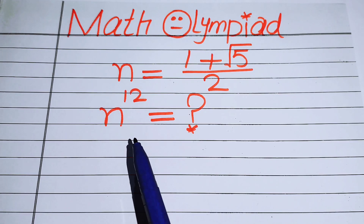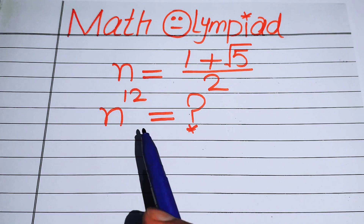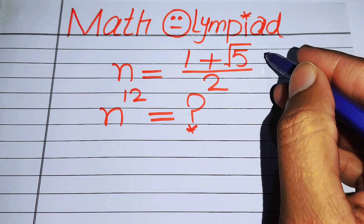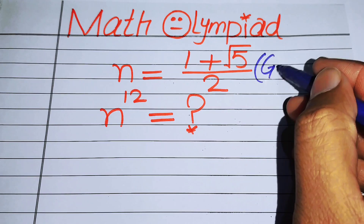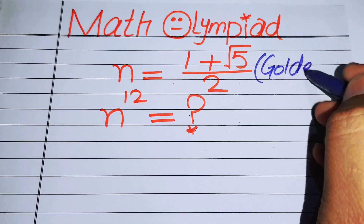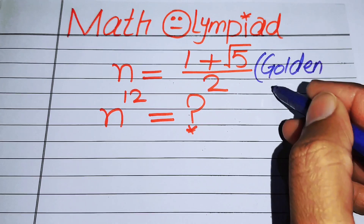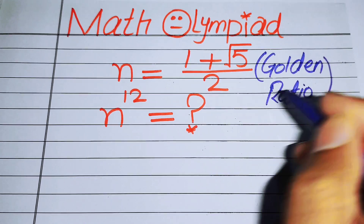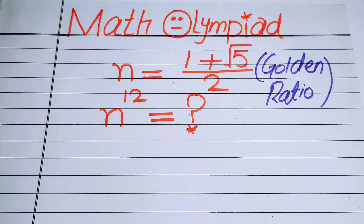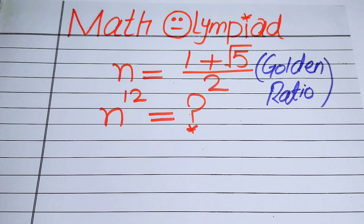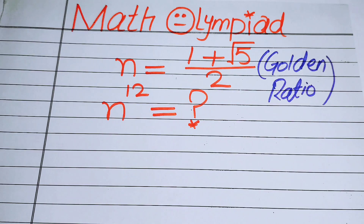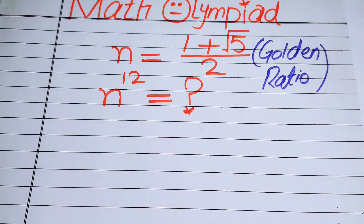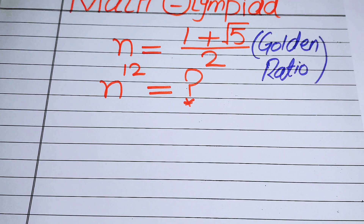We will solve for the value of n to the power of 12. This ratio is known as the golden ratio, and we will find the value of n to the power of 12.